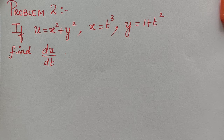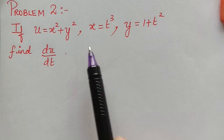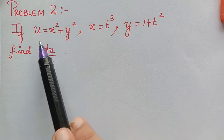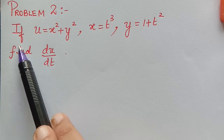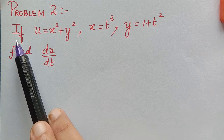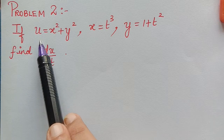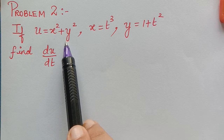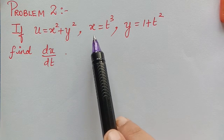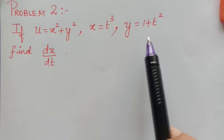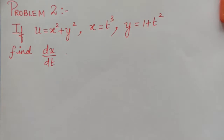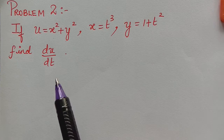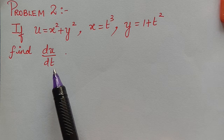Under the topic of total differential coefficient, here we have the second problem. It is given that u is equal to x squared plus y squared, x is equal to t cube, and y is equal to 1 plus t squared. Find du by dt.